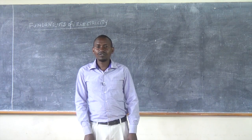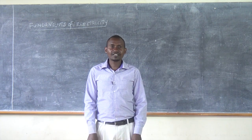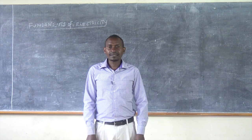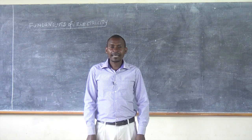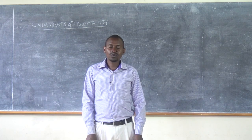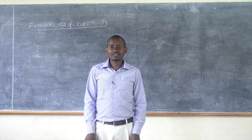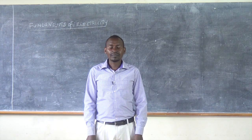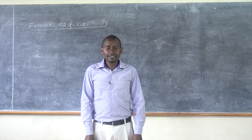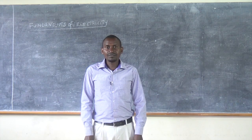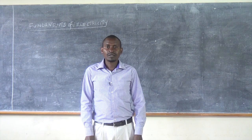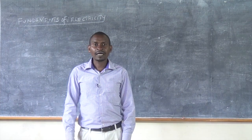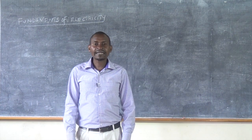Electricity is a form of energy, or is a source of energy, that is due to flowing electrons. Electrons are naturally occurring and they are found in every body and form an atom. Atoms — this is where we get electrons.